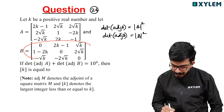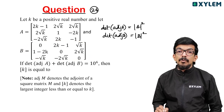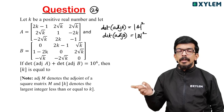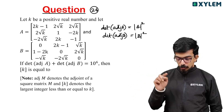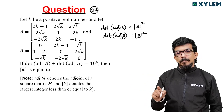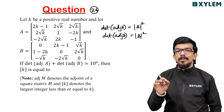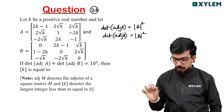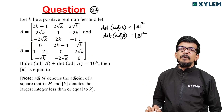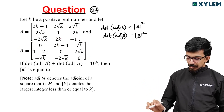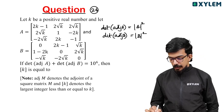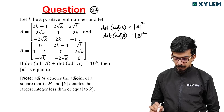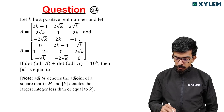Now observe: B is a skew-symmetric matrix of odd order. The determinant of a skew-symmetric matrix of odd order is zero. So that term is zero. Therefore, determinant of A whole square is equal to 10 raised to 6.